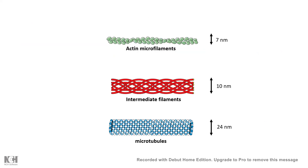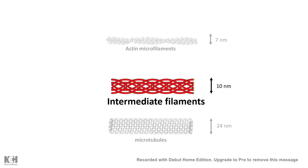Unlike actin microfilaments or microtubules, intermediate filaments have some unique properties. First, regarding their sizes: actin microfilaments are 7 nanometers, microtubules are 24 nanometers in diameter, and somewhere in between come intermediate filaments at 10 nanometers in diameter.